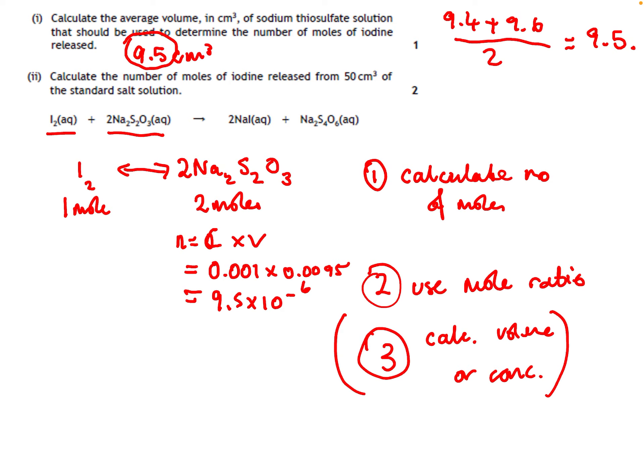Because it was a one-to-two ratio, the number of moles of iodine is half of that, giving 4.75 × 10⁻⁶ moles — that's your final answer. Just be aware of the mole ratio and using it to work out moles on the other side. This question is worth about two marks, with another mark for calculating volume or concentration.